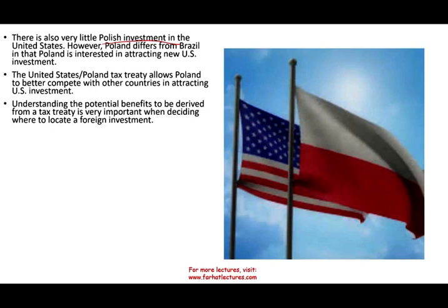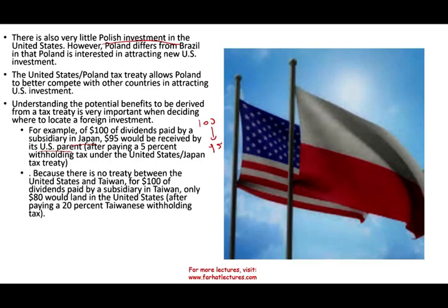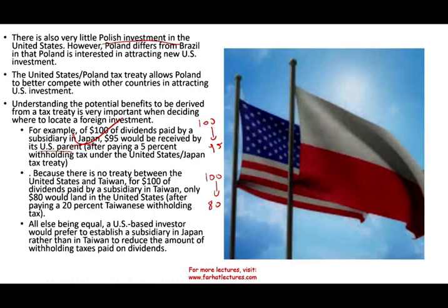For example, let's assume $100 in dividends paid by a subsidiary in Japan. $95 would be received by the U.S. parent company after Japan withholds 5%. With Taiwan, if you send $100 as dividend, the U.S. parent company would only receive $80. Everything else being equal, the U.S. company will prefer to open in Japan. That's why having a tax treaty gives you an advantage.